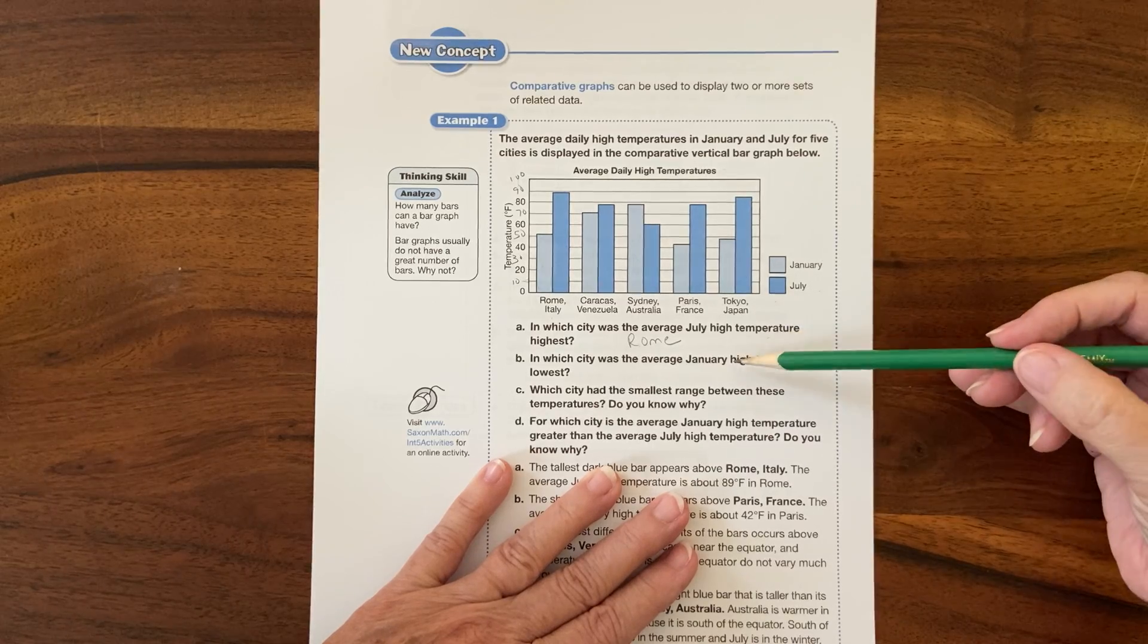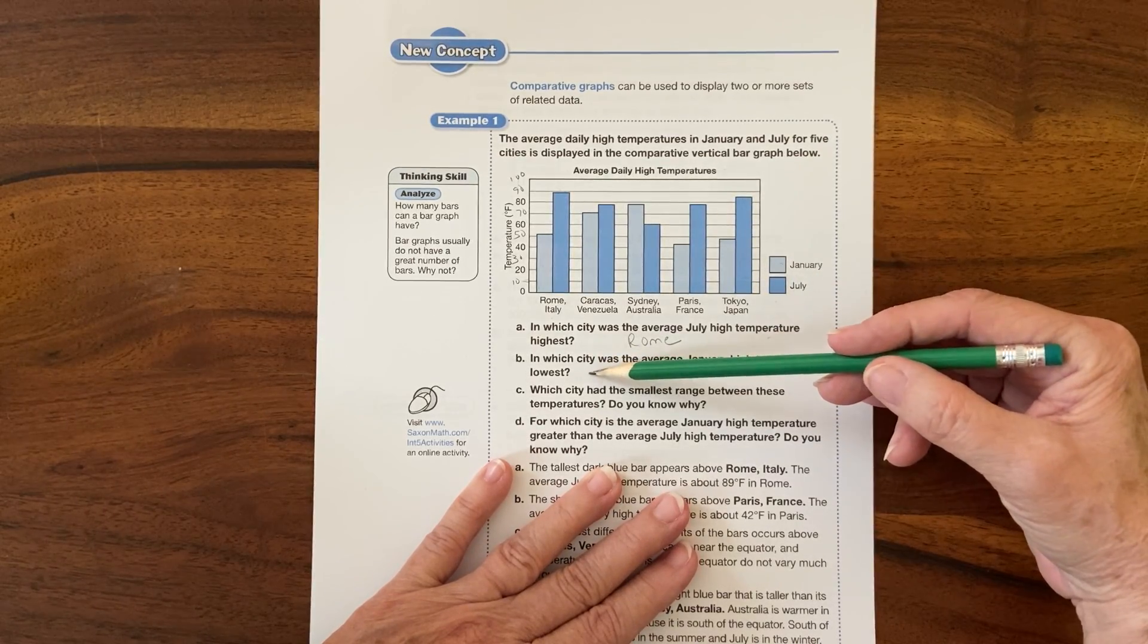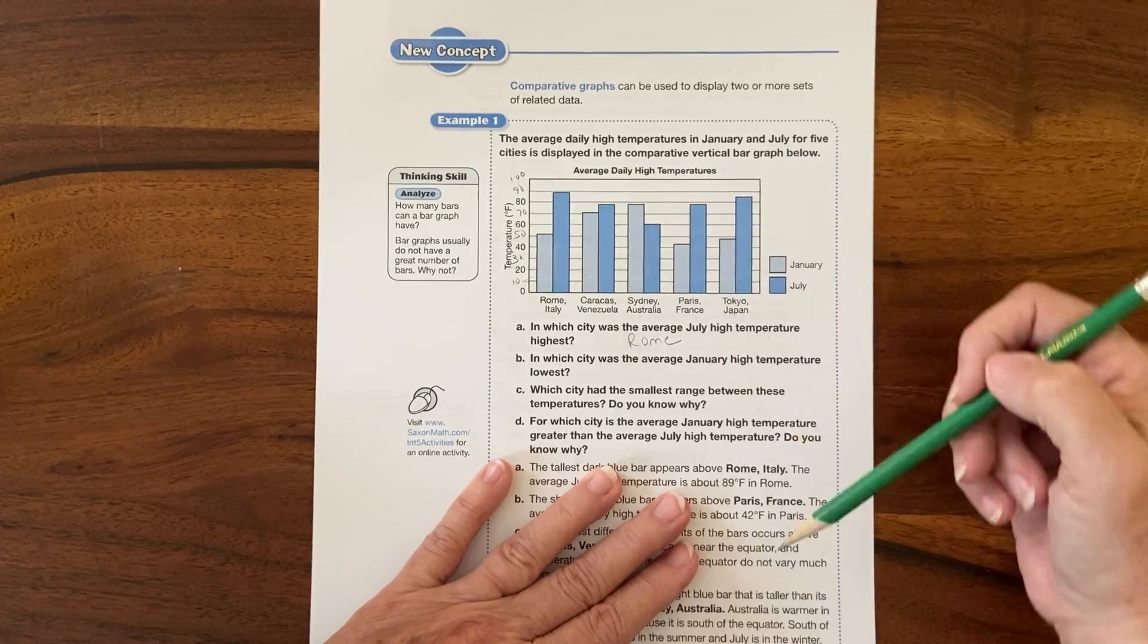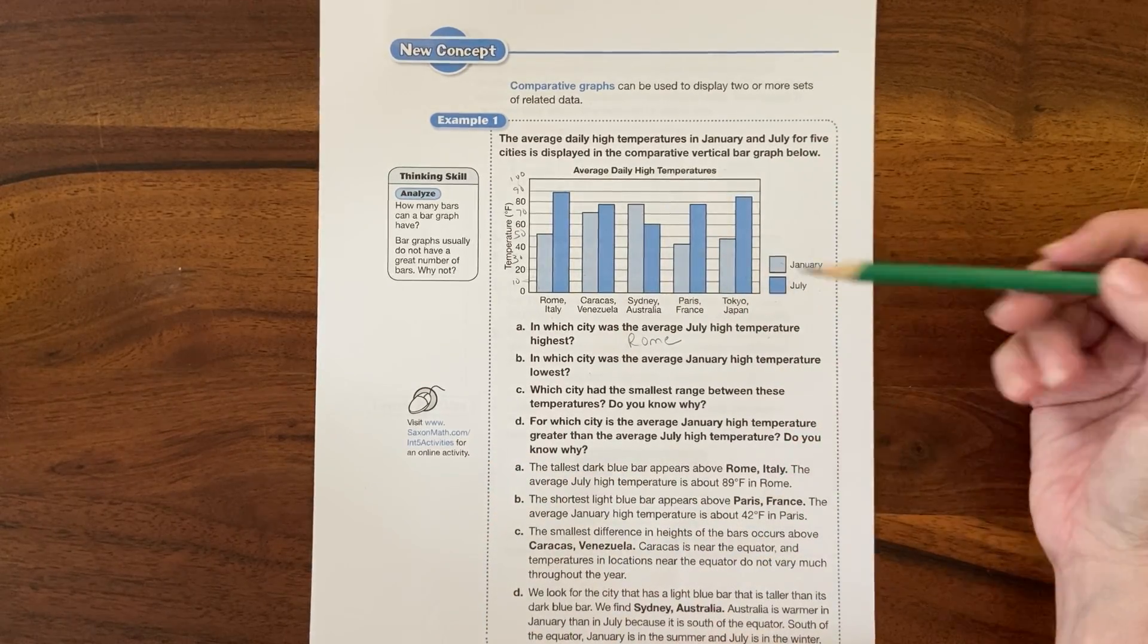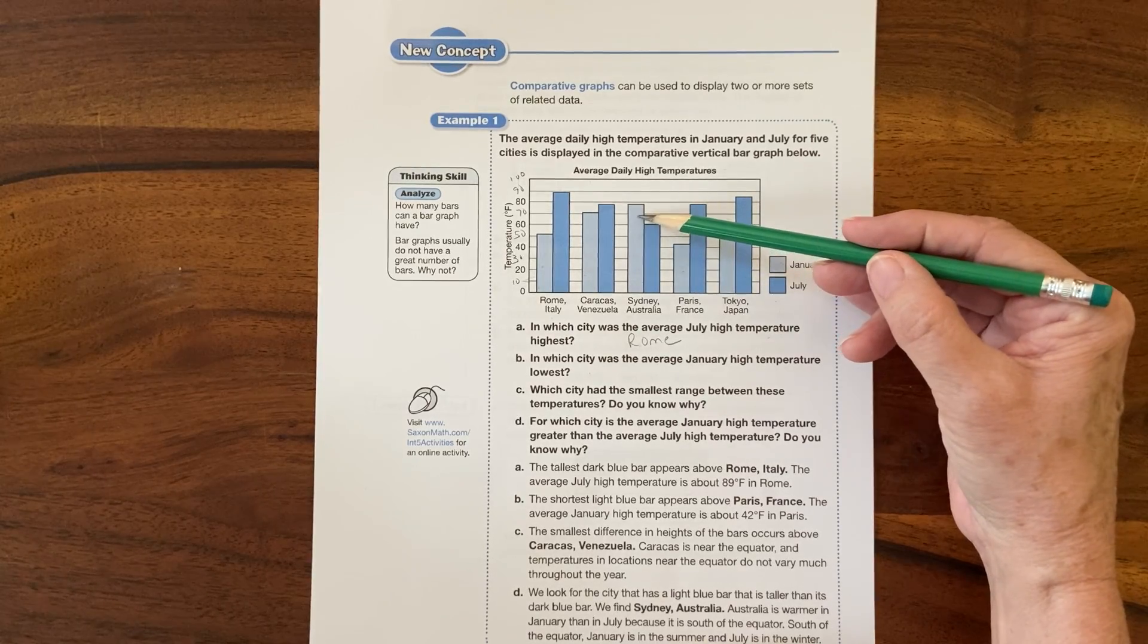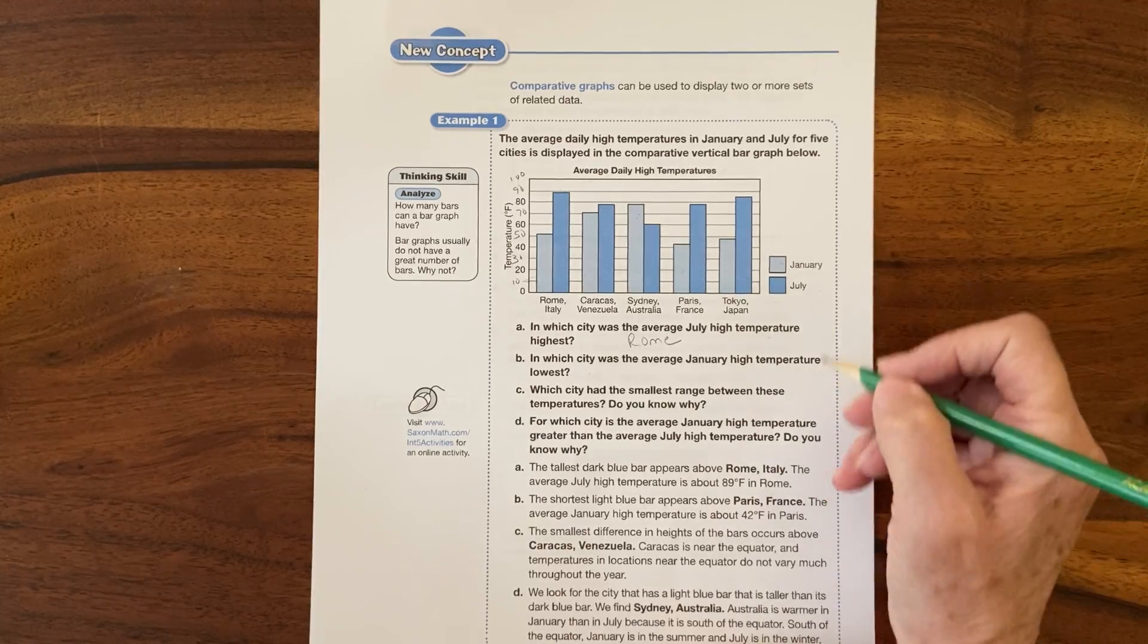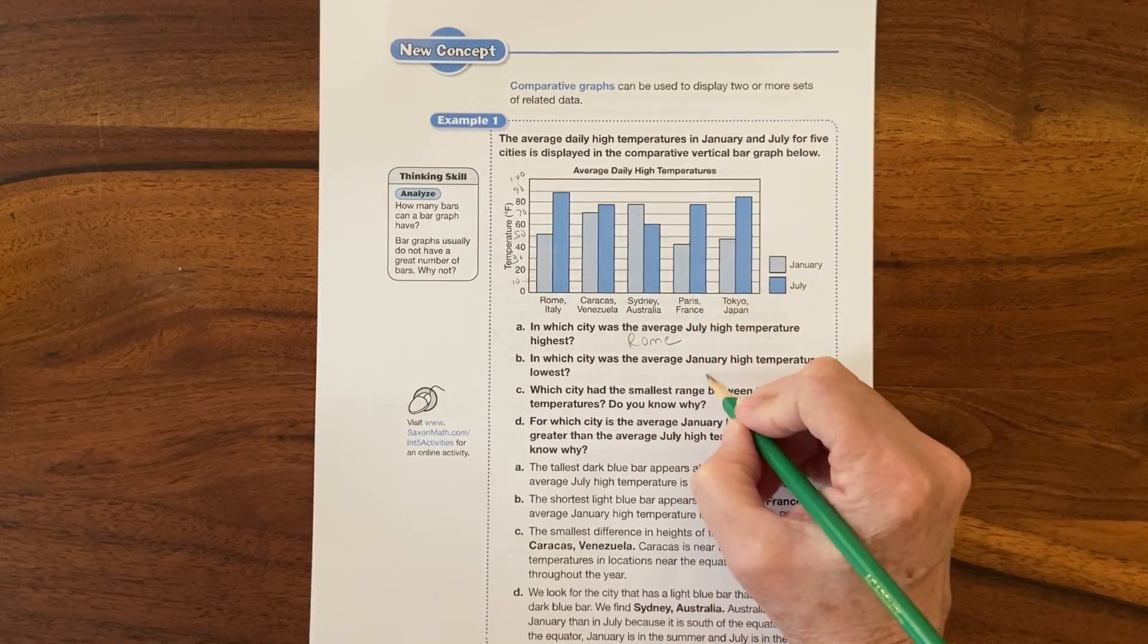In which city was the average January, so the light blue, high temperature the lowest? So now I'm looking at the light blues and looking to see which is the smallest bar, and it's this one right here. Look how high in Sydney in January, because it's in the southern hemisphere. That one was Paris, right.